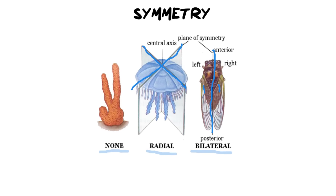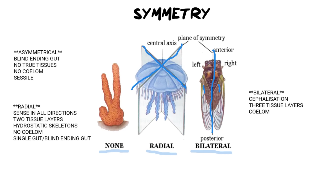This symmetry reveals certain things about organisms. Asymmetrical structures like sponges have a blind-ending gut, meaning food enters and exits through the same opening, so they don't have a complete digestive system. They have no true tissues — they're only made out of two cell layers. They have no coelom, meaning no body cavity for organs to grow independently. And they are sessile, meaning they do not move around. Some advantages are that they can grow almost anywhere in water, and they are simple filter-feeding organisms. However, they lack the majority of a nervous system and can't sense anything around them.